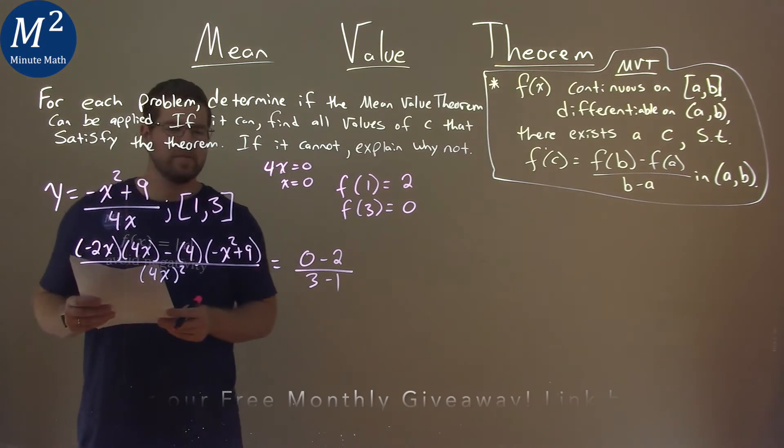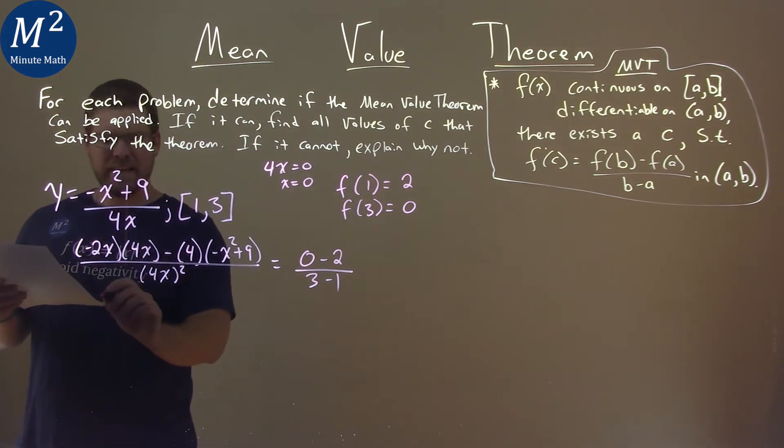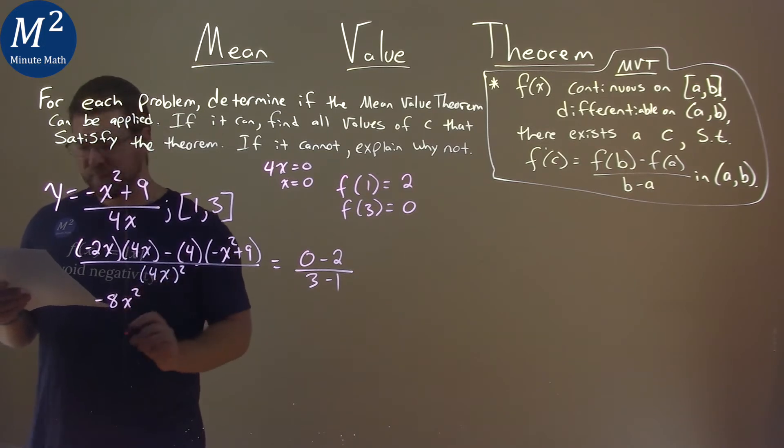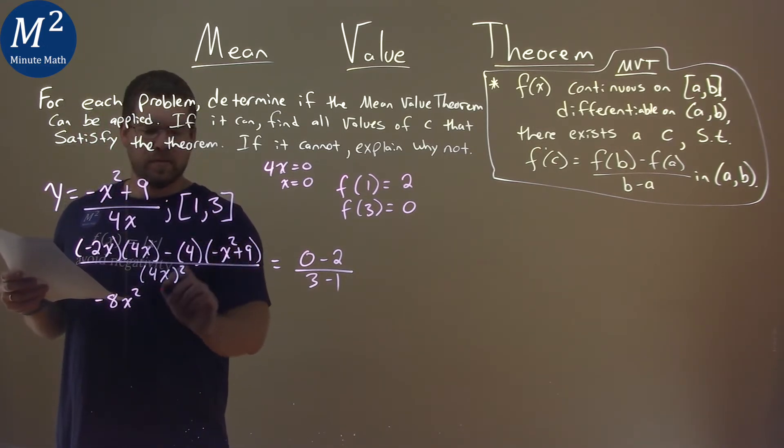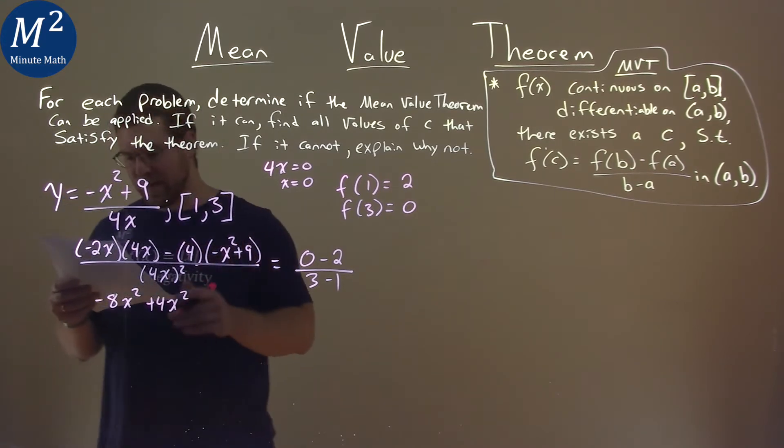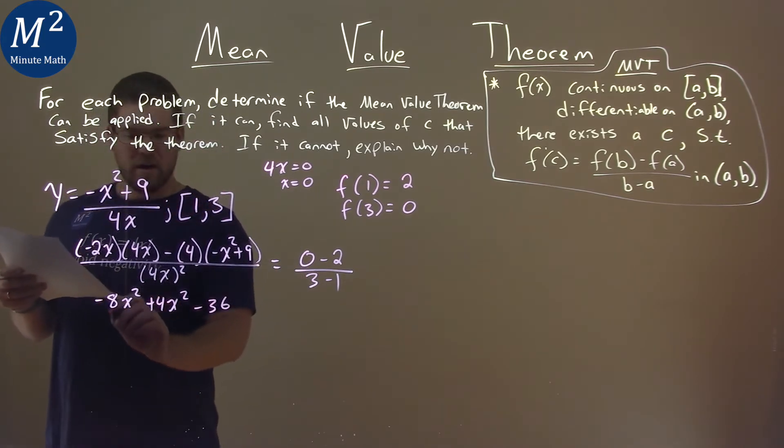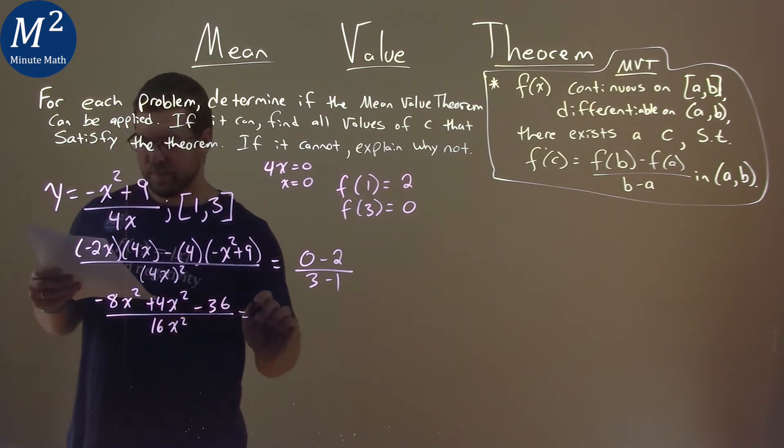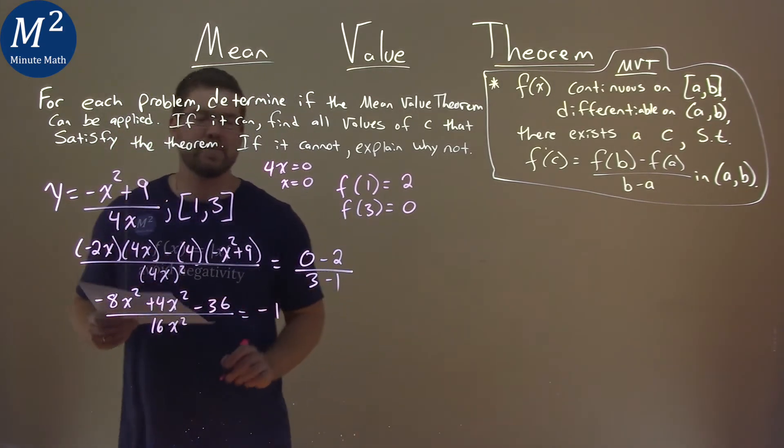Now it's time to simplify and solve. Negative 2x times 4x is negative 8x squared, minus 4 times negative x squared is positive 4x squared, minus 4 times positive 9 is minus 36, all over 4x squared, which is 16x squared. The right-hand side simplifies to be just negative 1.